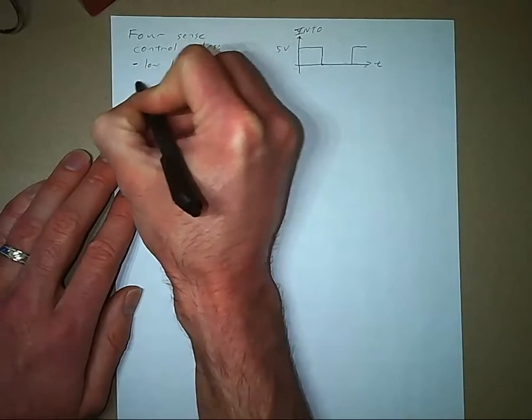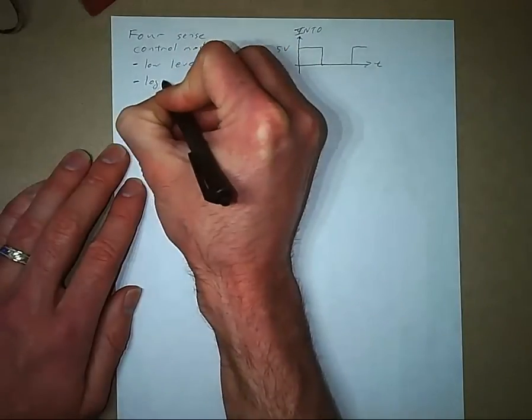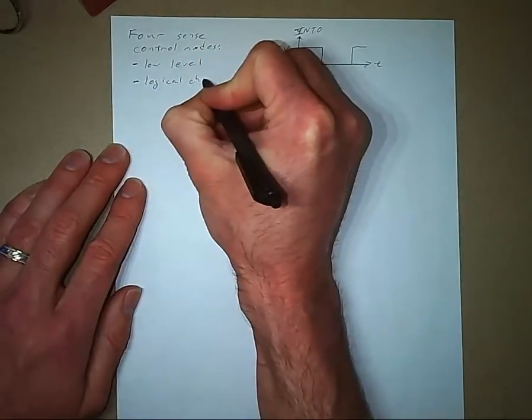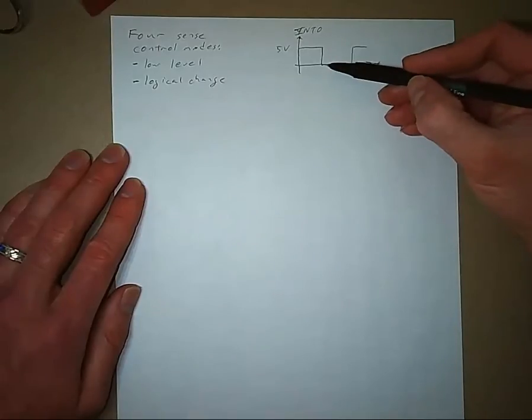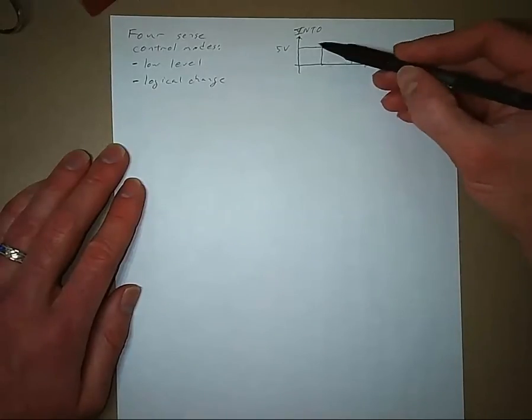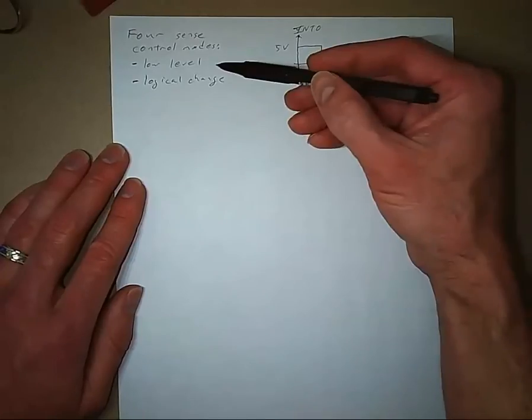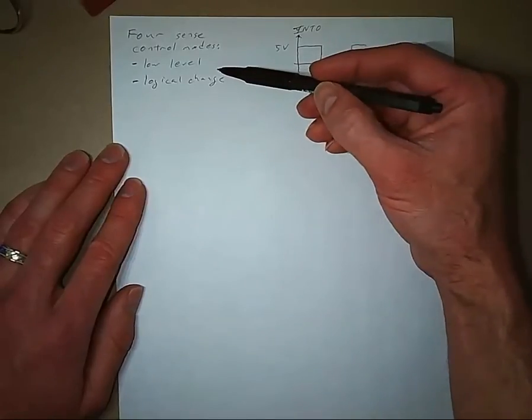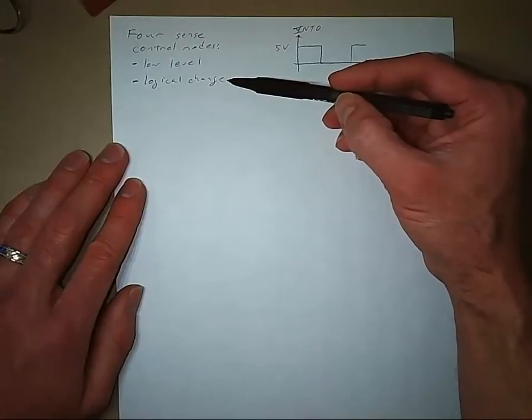Low level and then logical change. So whenever the pin goes from high to low, that would generate an interrupt because that's a logical change. Or when it goes from low to high, that would also generate an interrupt if we have the external interrupt set up for the sense control for logical change.